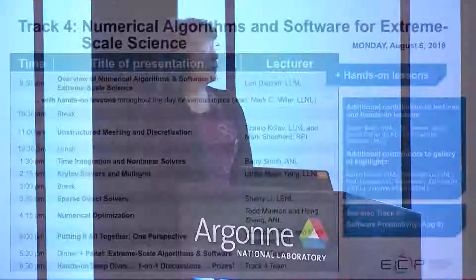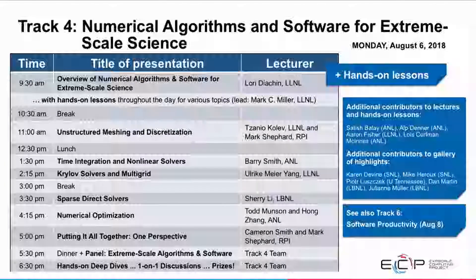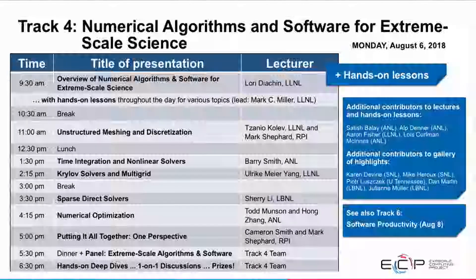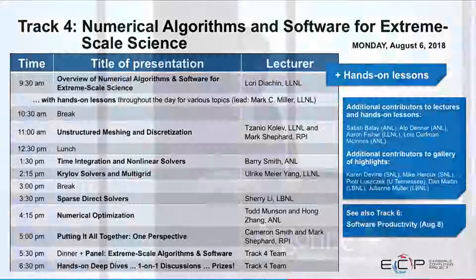This is track four in the Argonne Training Program, and what we're particularly focused on in this session is looking at numerical algorithms and software for extreme scale science. The way we've organized this session is through a series of lectures and hands-on exercises that will be going on throughout the day. We've tried to select a subset of algorithms and software that will give you a general feel for the overall problem solution — ranging from the discretization of the problem to the solution of linear and nonlinear problems, through more predictive science capabilities such as optimization.